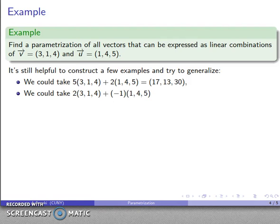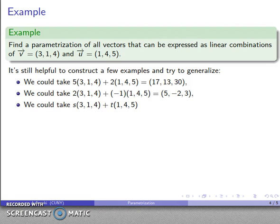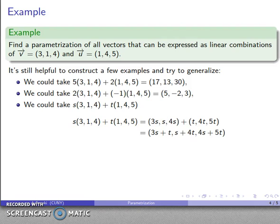I could take a different linear combination. And again, after all the dust settles, I have a different combination there. And I could take a general linear combination. So I'll take S of these and T of those. And let's see what happens there. That's going to be, well, I find the scalar multiples, I add them together, and there's my linear combination. There's my parameterization of all the vectors that I can express as linear combinations of those two base vectors.